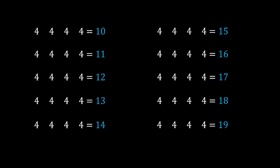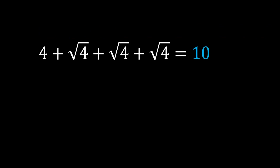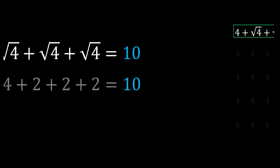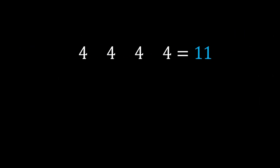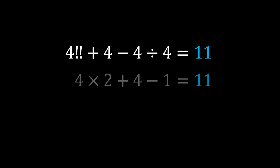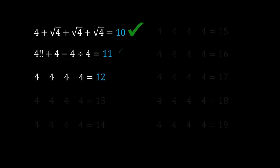Now we do two-digit numbers from 10 to 19, starting with 10: 4 + √4 + √4 + √4 = 4 + 2 + 2 + 2 = 10. Number 11 is interesting — here I used double factorial for the first time: 4!! + 4 − 4 ÷ 4. That is 4×2 + 4 − 1 = 8 + 3 = 11.